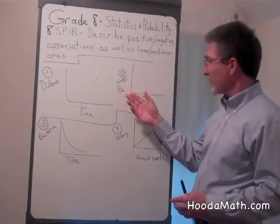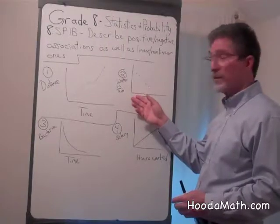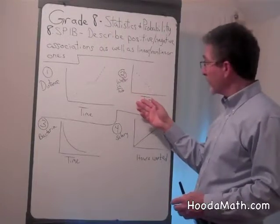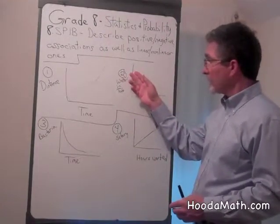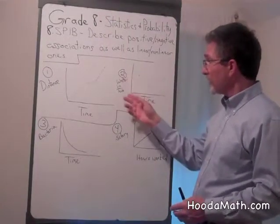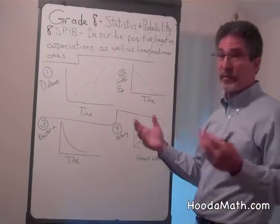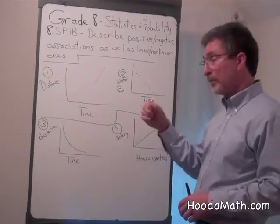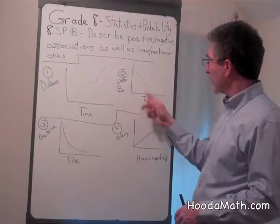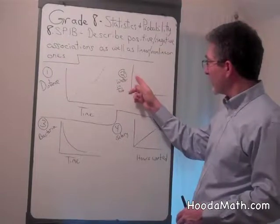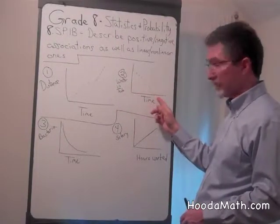A negative association is when the independent variable increases, but the dependent variable decreases. For example, you have water in the bathtub. You pull out the plug. As time goes by, the amount of water in the tub decreases.